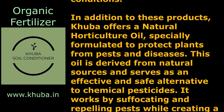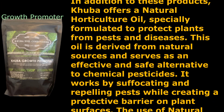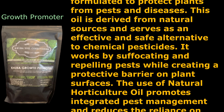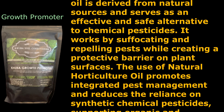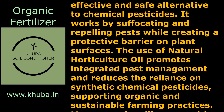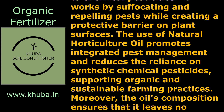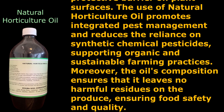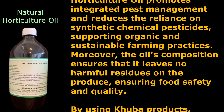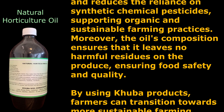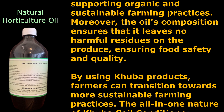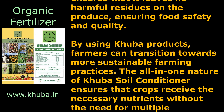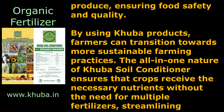Kuba also offers a natural horticulture oil, specially formulated to protect plants from pests and diseases. This oil is derived from natural sources and serves as an effective and safe alternative to chemical pesticides. It works by suffocating and repelling pests while creating a protective barrier on plant surfaces. The use of natural horticulture oil promotes integrated pest management, reduces reliance on synthetic chemical pesticides, and ensures no harmful residues are left on the produce, supporting food safety and quality.